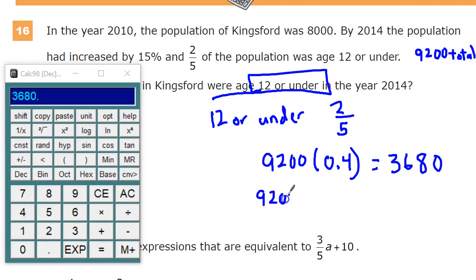Another way you could do it is you could put 2 fifths in parentheses. Or you could do 9,200 times 2, and then you're going to divide that whole thing by 5. So either one of those should give you the appropriate answer. 9,200 times 2, hit your equal sign there, divided by 5, gives you 3,680.